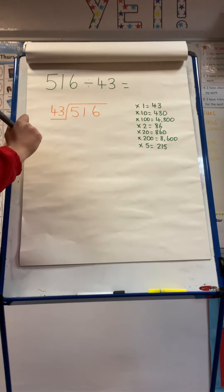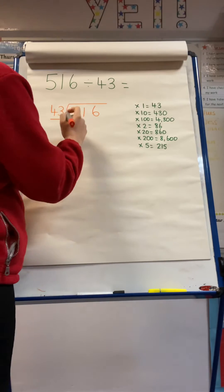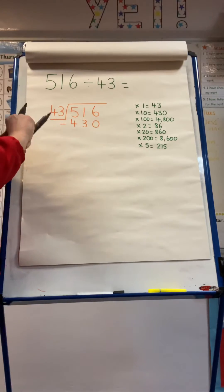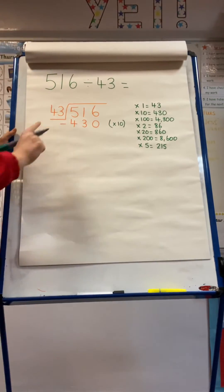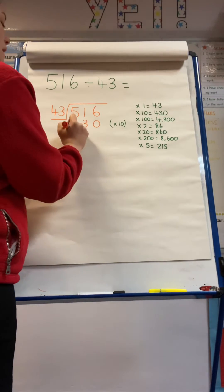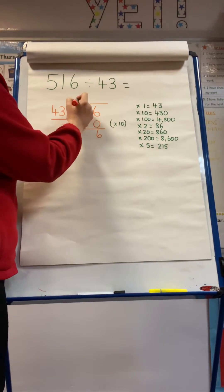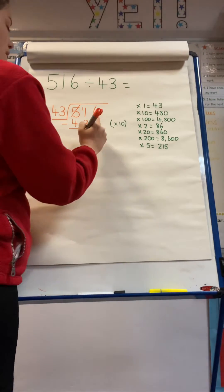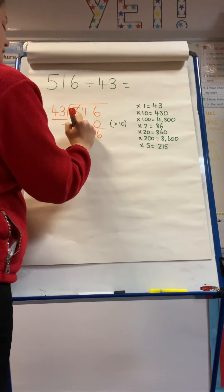So having a look at those, I could do 43 times 10, which is 430. So I'm going to subtract 430 from 516 and put times 10 in brackets next to it so I know what I multiplied 43 by to get that answer. So 6 subtract 0 is 6. I can't do 1 subtract 3, so I go to the hundreds, take 1 from there to make it 11, subtract 3, which is 8. And then 4 subtract 4, which is 0.